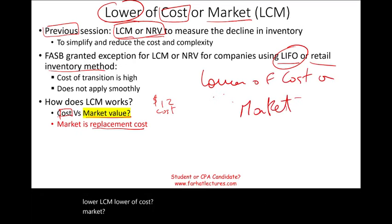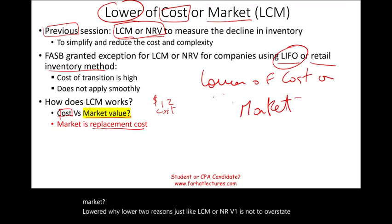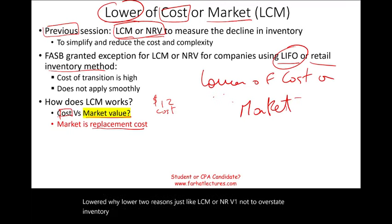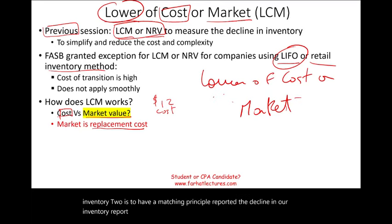Why lower? Two reasons — just like LCM or NRV. One is not to overstate inventory. Two is to have a matching principle: report the decline in inventory, and report that loss of utility in the period in which that decline occurs.